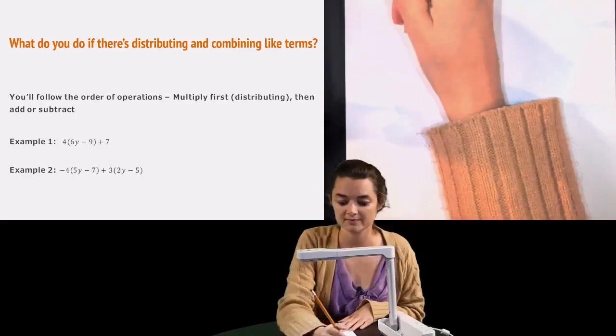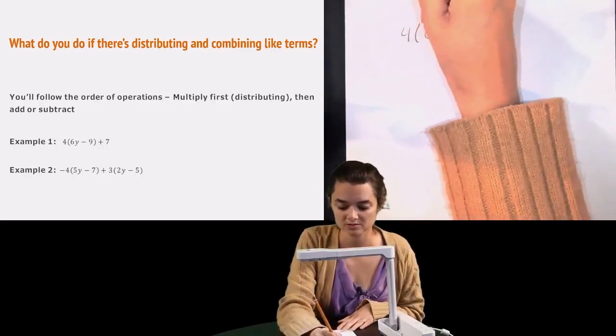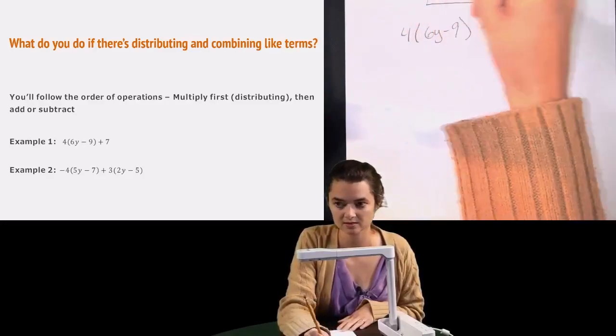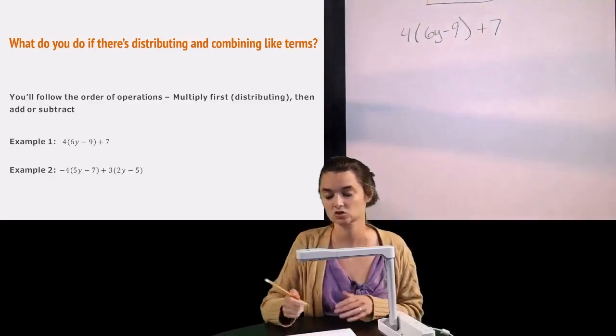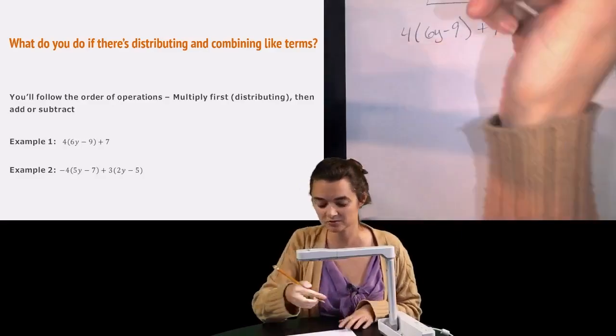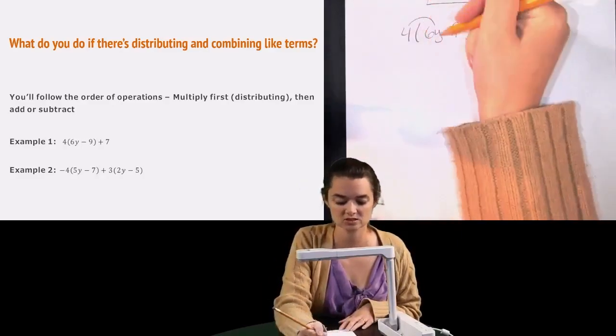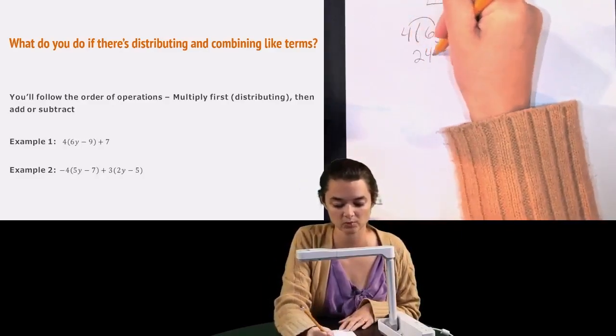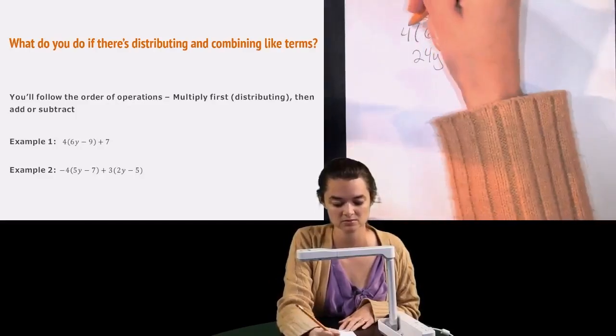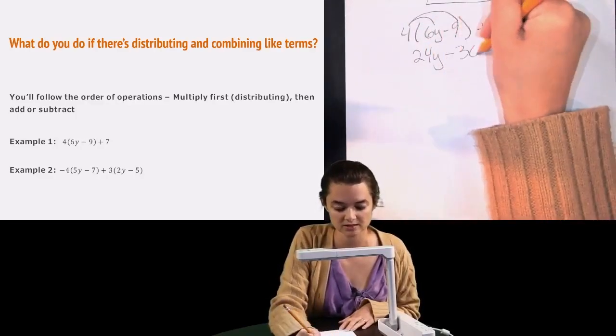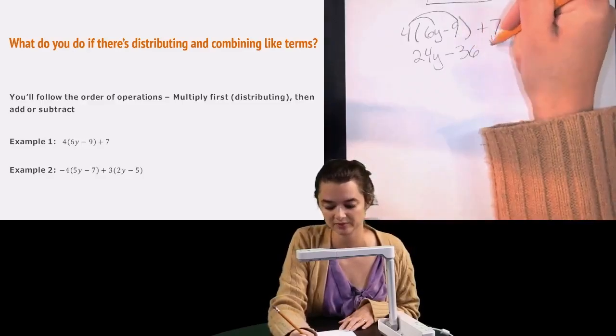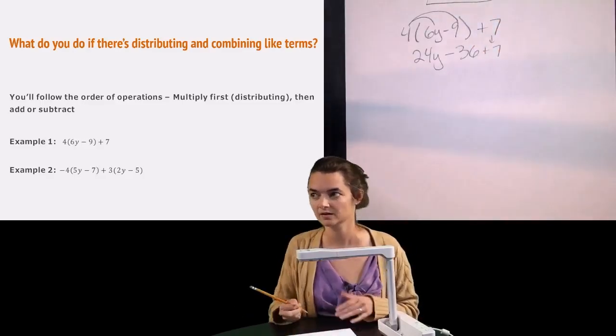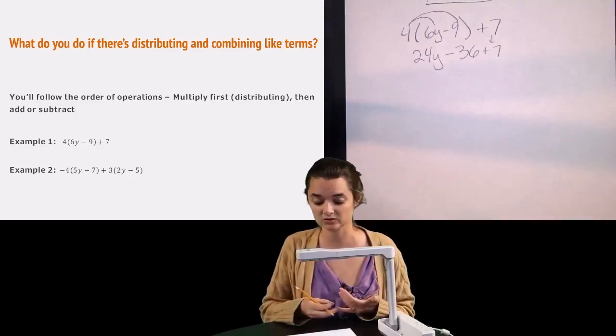So let's do a couple examples of that. The first one I have is 4 times 6y minus 9 plus 7. So I'm going to distribute my 4 first. So I'm going to do 4 times 6y, which would be 24y minus 4 times 9, which would be 36. And then I'm just going to bring down the plus 7.